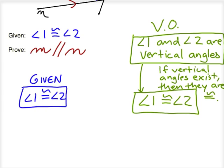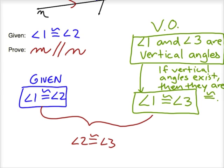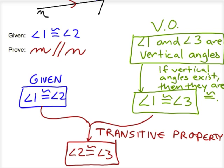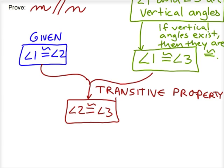Angles 1 and 3 are vertical angles, which means angles 1 and 3 are congruent — that's because vertical angles are congruent. Now, angles 1 and 2 are congruent, as shown in blue, and angles 1 and 3 are congruent, as shown in green, so the blues and greens can come together. If 1 equals 2 and 1 equals 3, then 2 and 3 are congruent — angle 2 is congruent to angle 3 by the transitive property. And if angles 2 and 3 are congruent and they are corresponding angles, then corresponding congruent angles always make parallel lines, so that last box we can fill in is that M and N are parallel.